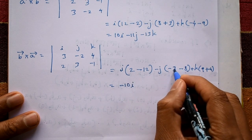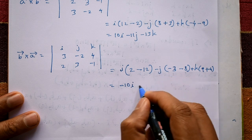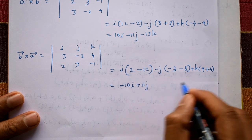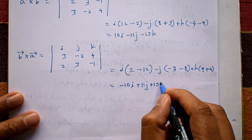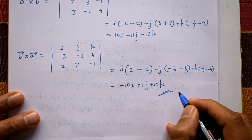So b cross a equals minus 10i plus 11j plus 13k. This is the required solution. Note that b cross a equals negative of a cross b, as expected.